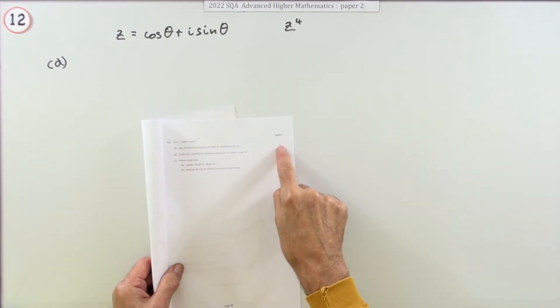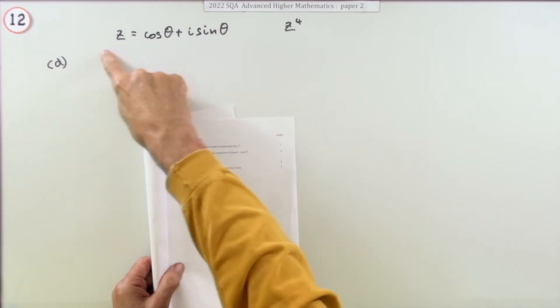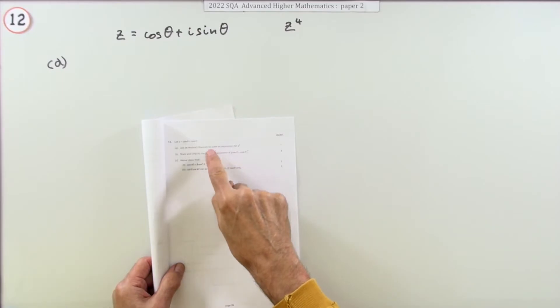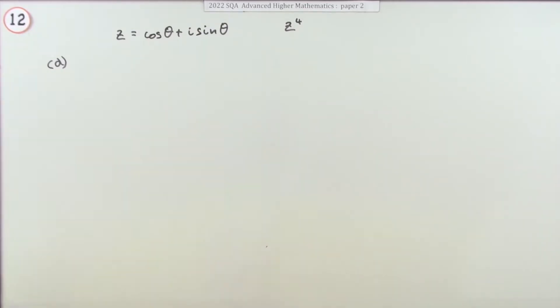First mark just for one mark. If z is this complex number expressed in polar form there, use de Moivre's theorem to state an expression for z to the 4.